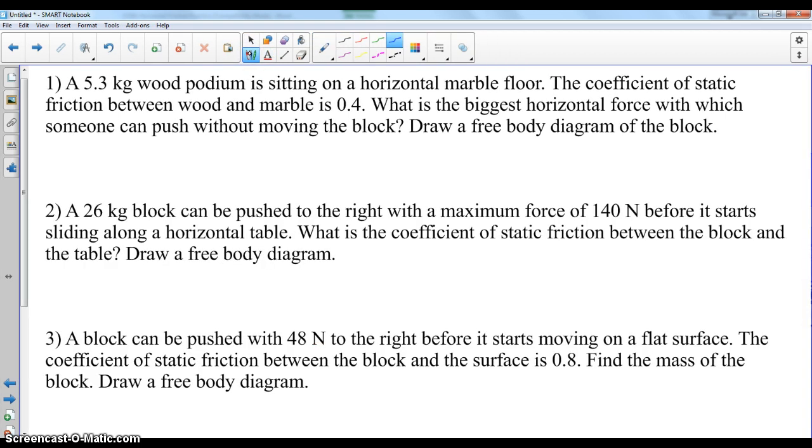So I spaced these out. It says a 5.3 kilogram wood podium. That's the mass of the podium. It is sitting on a horizontal marble floor. The coefficient of static friction between wood and marble is 0.4. So we've been given the coefficient of static friction, which is a kind of a measure of roughness between these surfaces, wood and marble. Then we're asked, what's the biggest horizontal force with which someone can push without moving the block? So we have a horizontal force, which is F sub A, the applied force. And I'm going to put F_A, and then in parentheses, it's horizontal.